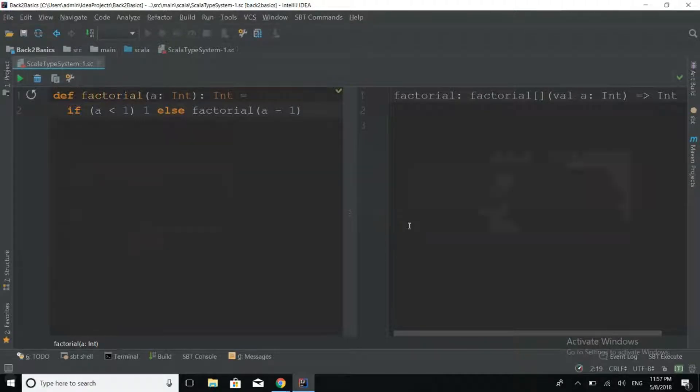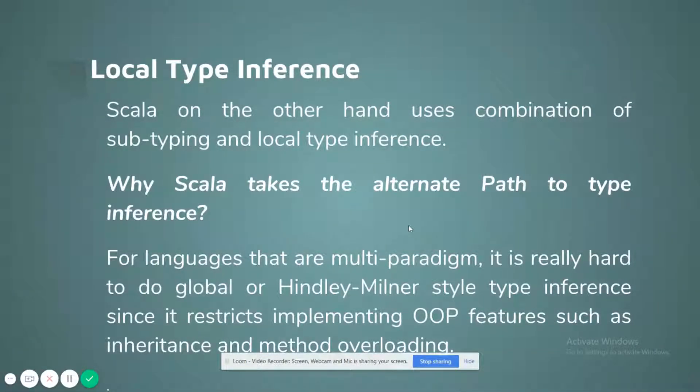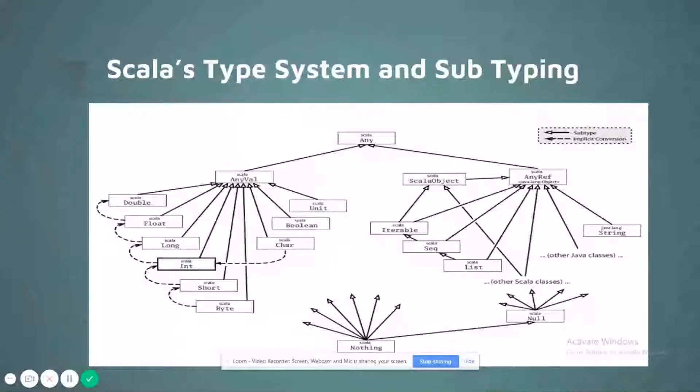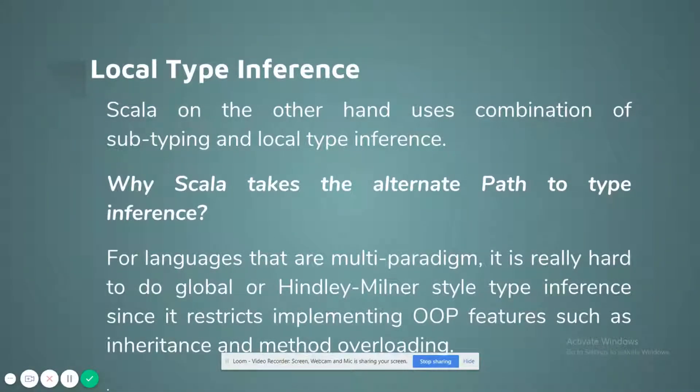In Scala, we have to annotate the types wherever local type inference does not help. In order for the previous snippet to work in Scala, we had to explicitly specify the return type. The question that comes is why did Scala choose to use local type inference over the global type inference? The simple answer to that is for languages that are multi-paradigm like Scala, it is really hard to do a global or Hindley-Milner style algorithm of type inference since it restricts the implementation of OOP features like inheritance and method overloading. Languages like Haskell still do global type inference, but Scala has decided to take a different trade-off.